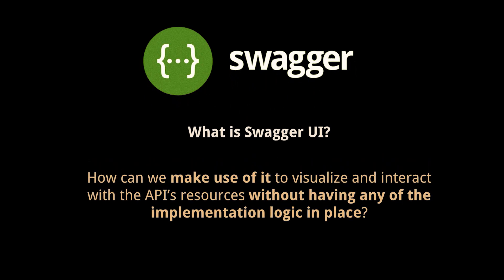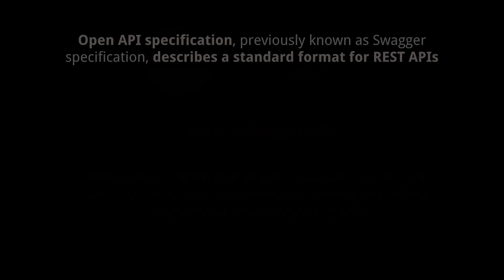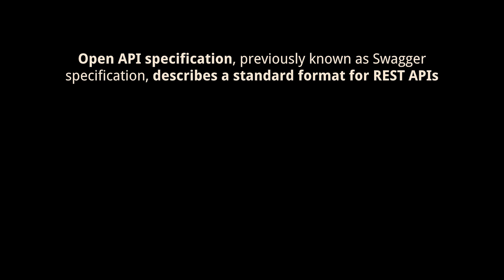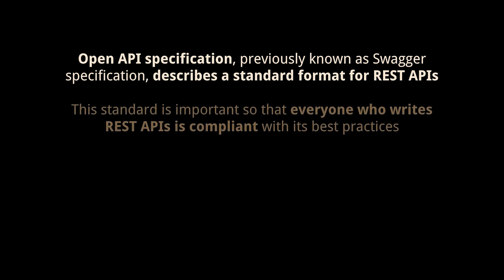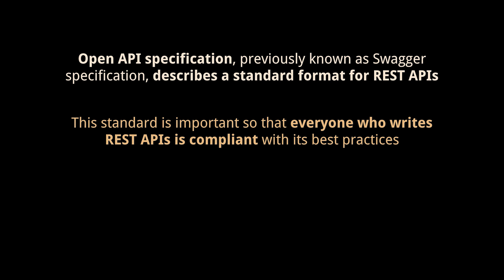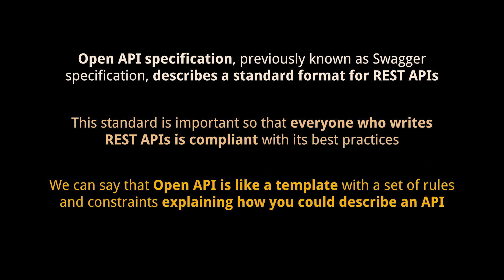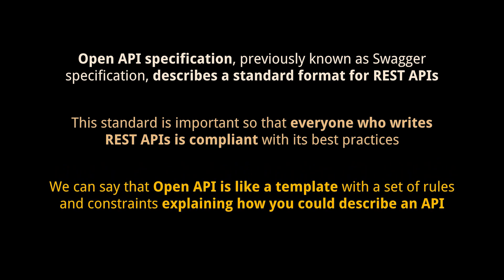Without having any of the implementation logic in place, Open API Specification — previously known as Swagger Specification — describes a standard format for REST APIs. This standard is important so that everyone who writes REST APIs is compliant with its best practices such as versioning, safety, and error handling. We can say that Open API is like a template with a set of rules and constraints explaining how you could describe an API.